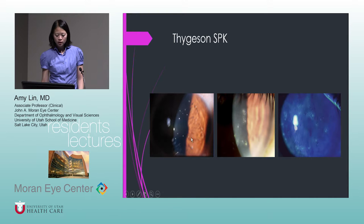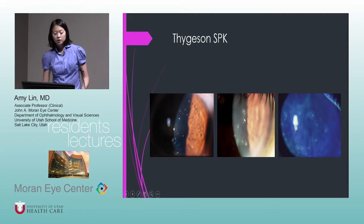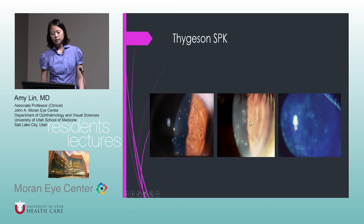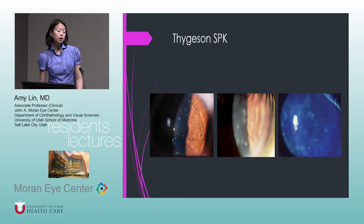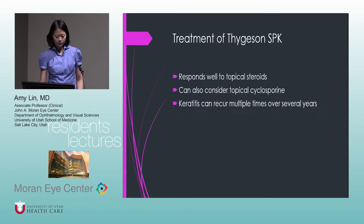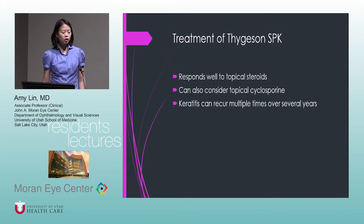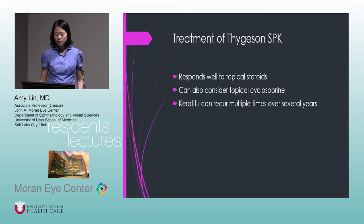You'll see multiple very small dots in the epithelium that stain with fluorescein, sometimes with a little haze around the dots. These look different from dry eye punctate epithelial erosions — here the lesions are slightly elevated, whereas in dry eye you see excavation of the epithelium. They typically respond very well to topical steroids, and you could also consider topical cyclosporine. However, they tend to recur multiple times over several years. Viral etiologies have been investigated but nothing has been confirmed.